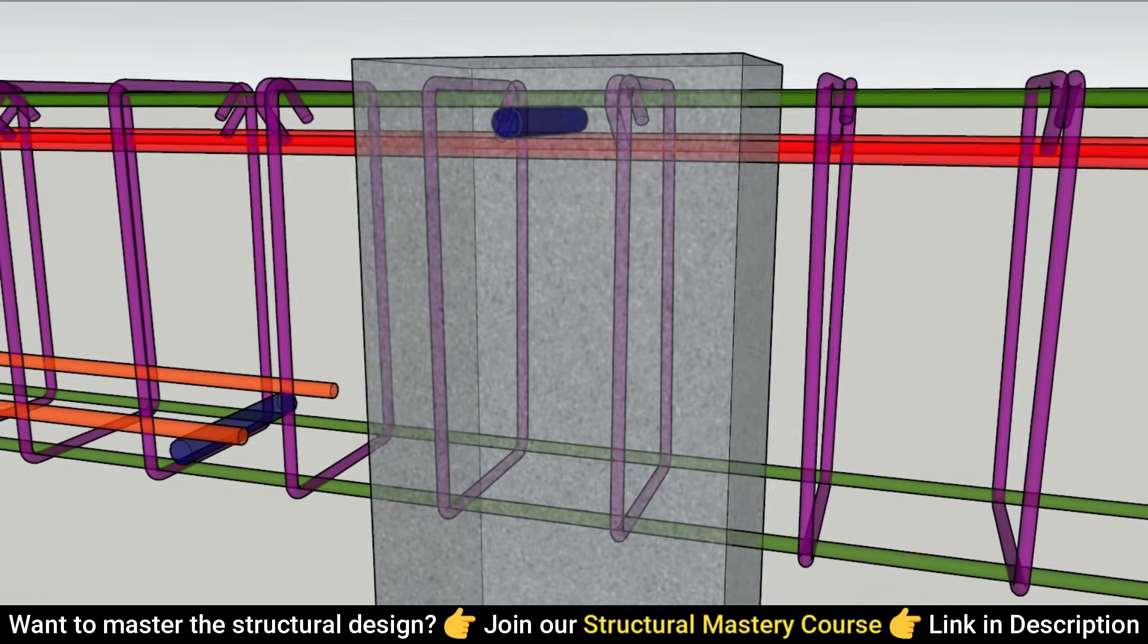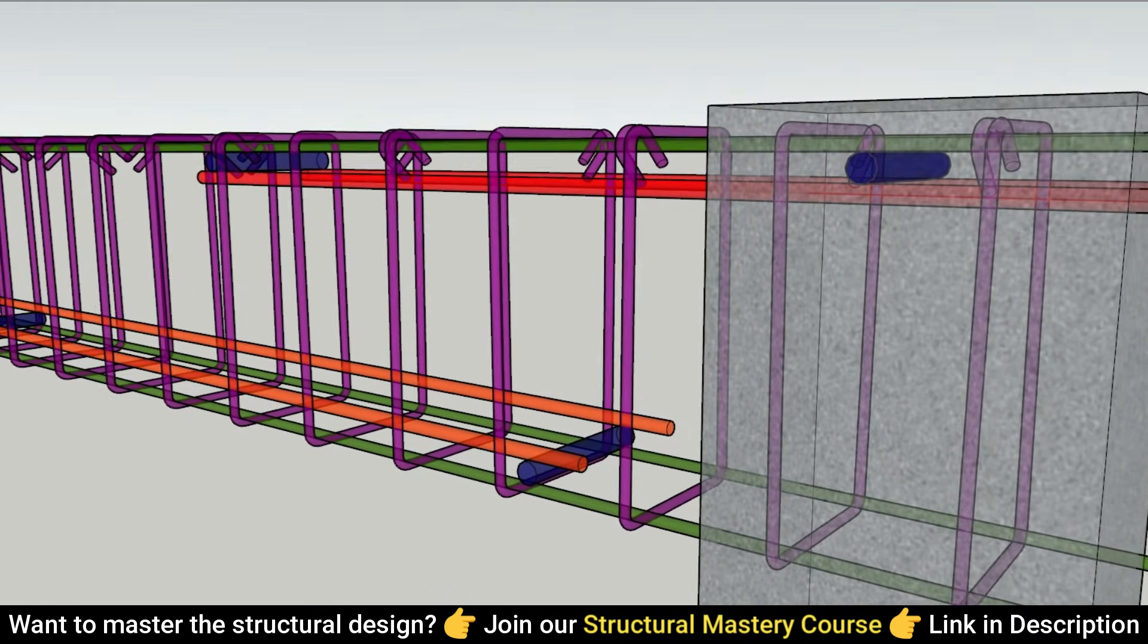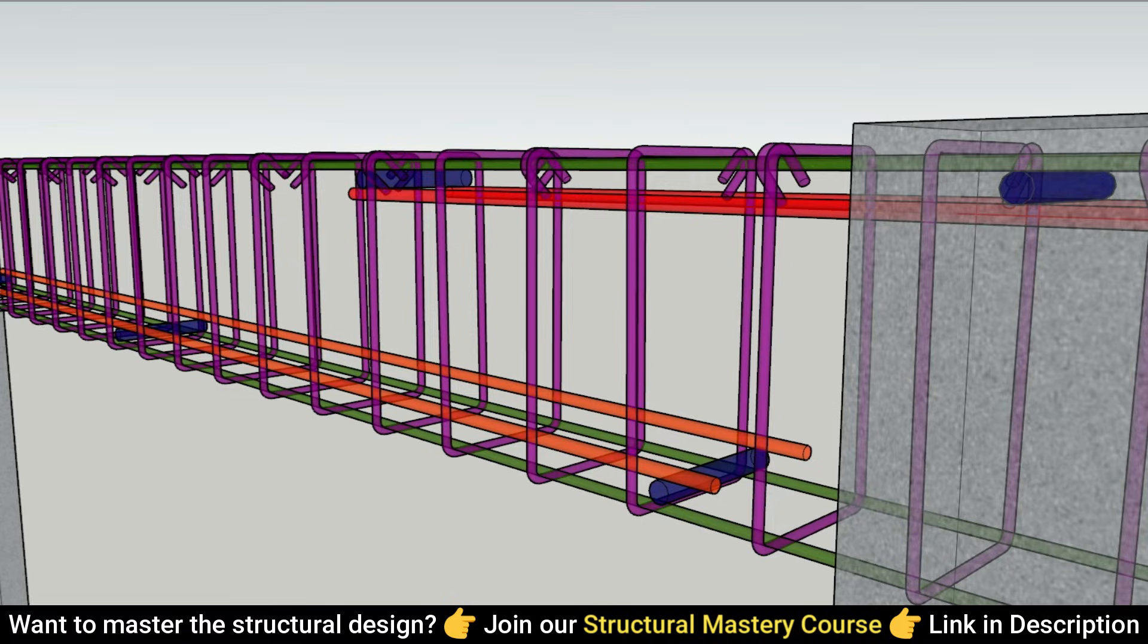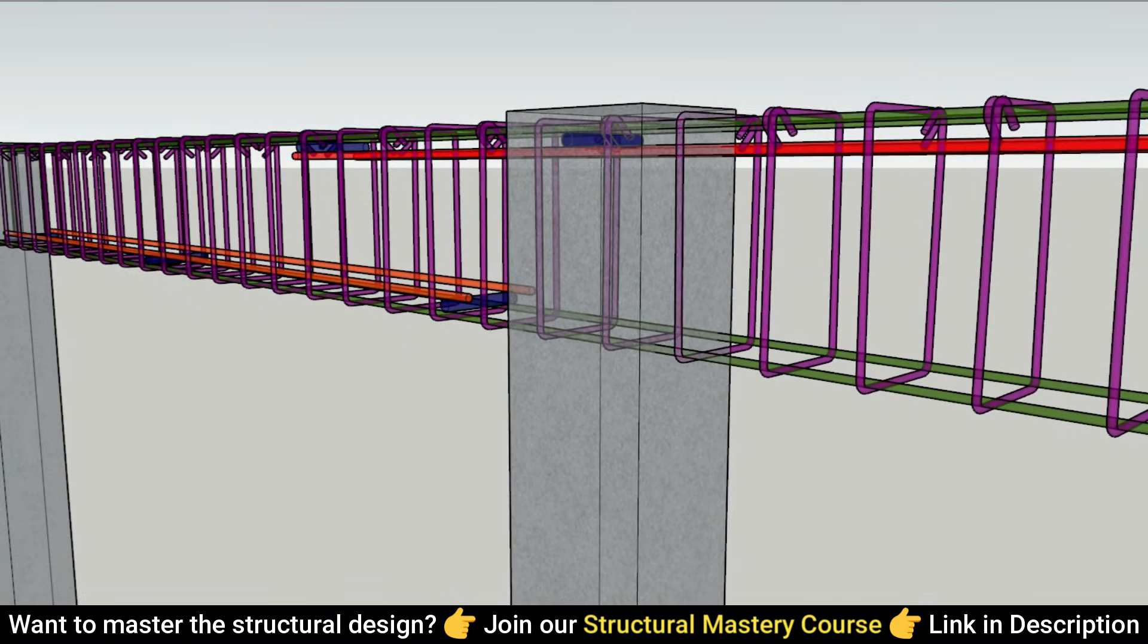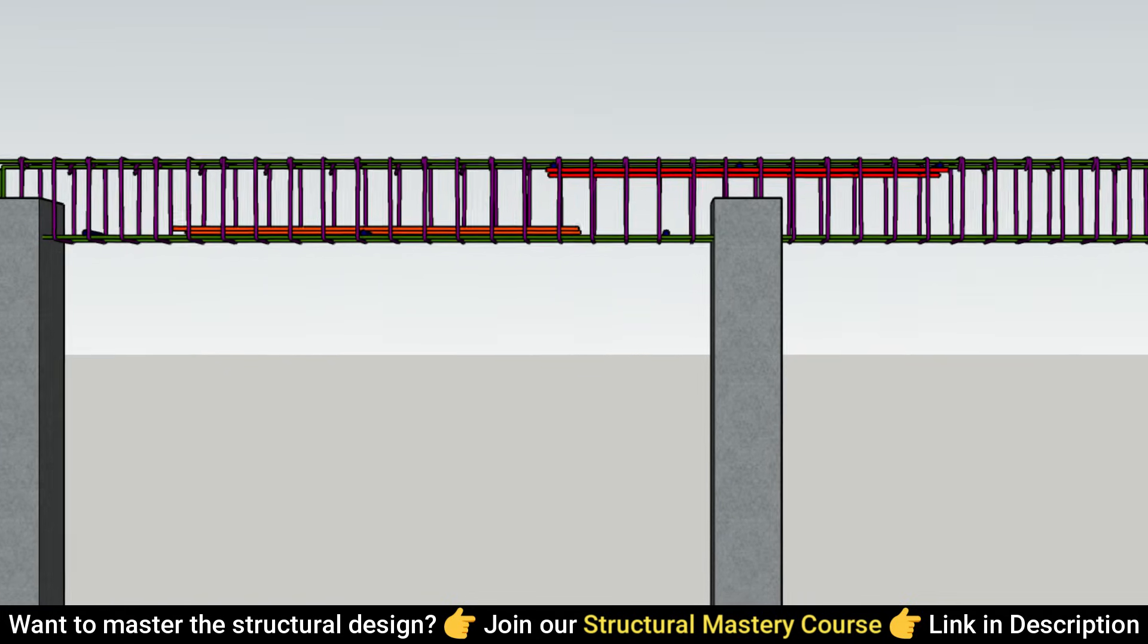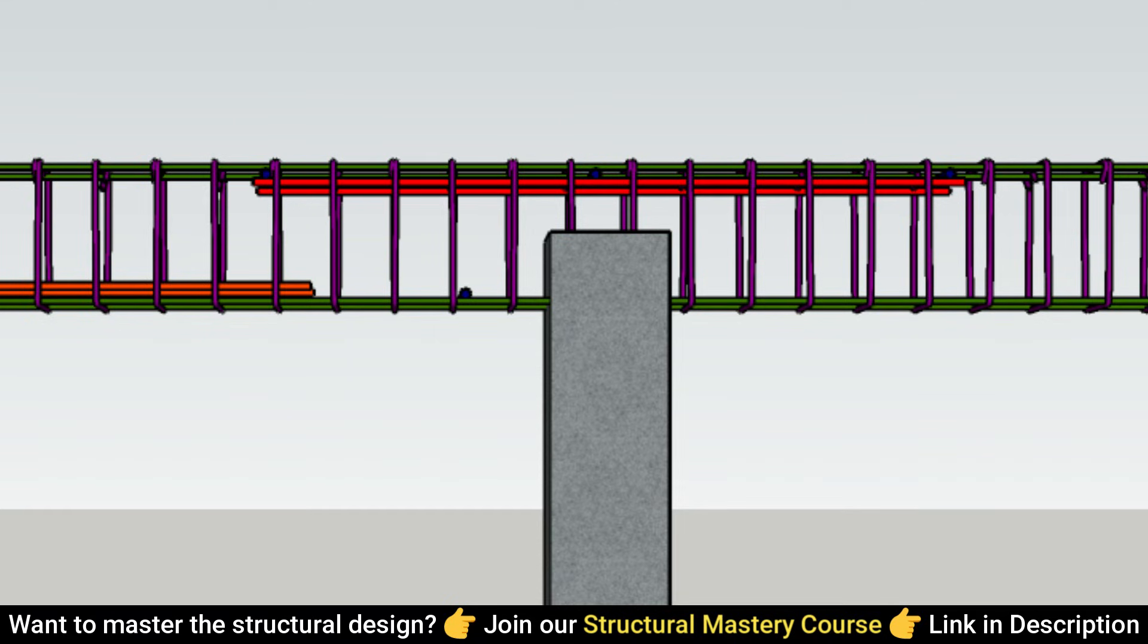In multi-span or continuous beams, the approach to bottom reinforcement, top reinforcement, and stirrups is almost similar to that of single-span beams except for the intermediate junctions. At these points, top and bottom reinforcement may extend into adjacent spans as dictated by the design.